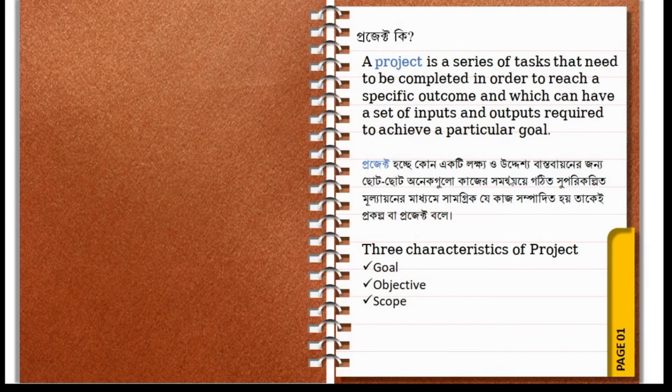To know what software project management is, I think we should first know what a project is. A project is a series of tasks that need to be completed in order to reach a specific outcome, and which can have a set of inputs and outputs required to achieve a particular goal.